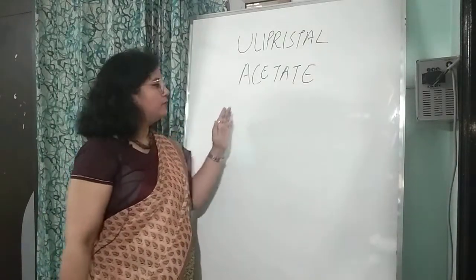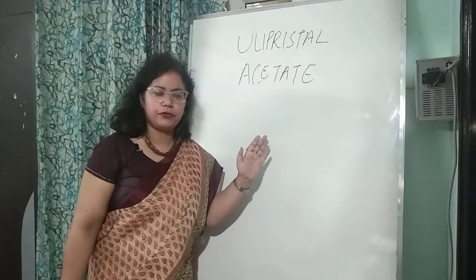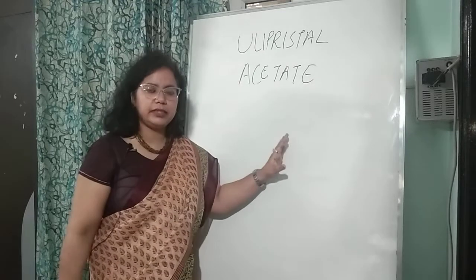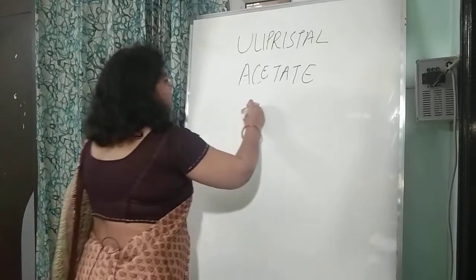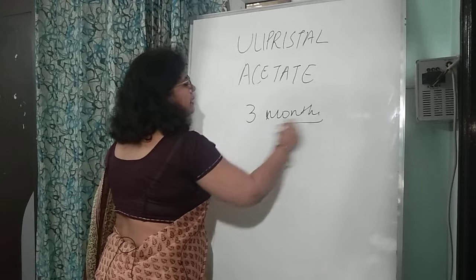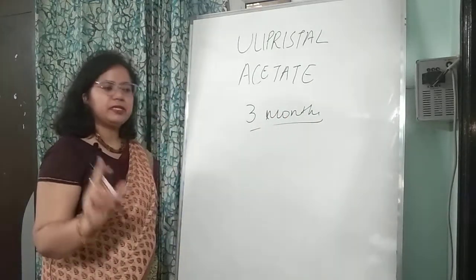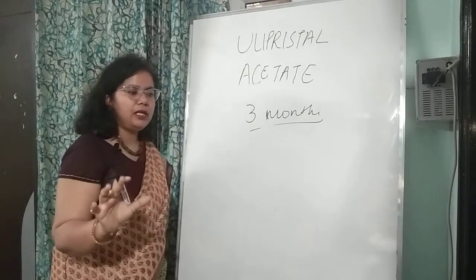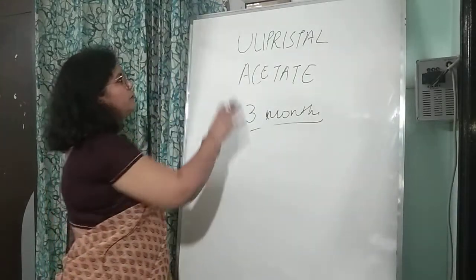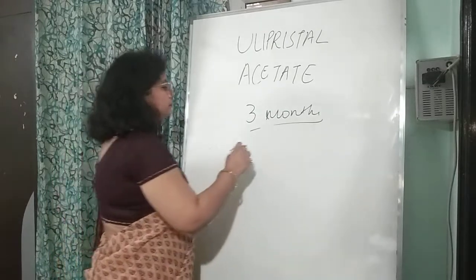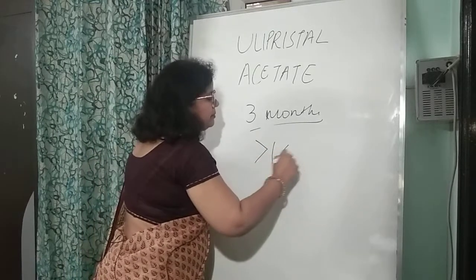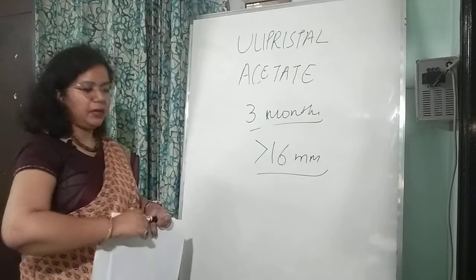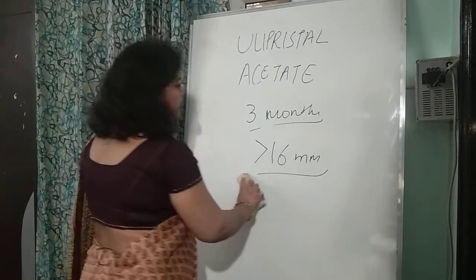If your woman is on ulipristal acetate, there may be endometrial hypertrophy. Studies have found these endometrial changes are reversible within 3 months after stopping therapy. If persistent endometrial hypertrophy — with thickness greater than 16 mm — persists beyond 3 months after stopping treatment, subject her to endometrial biopsy to rule out other causes, especially endometrial carcinoma.